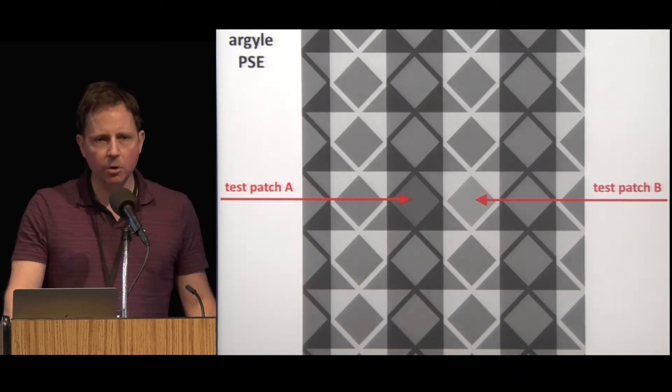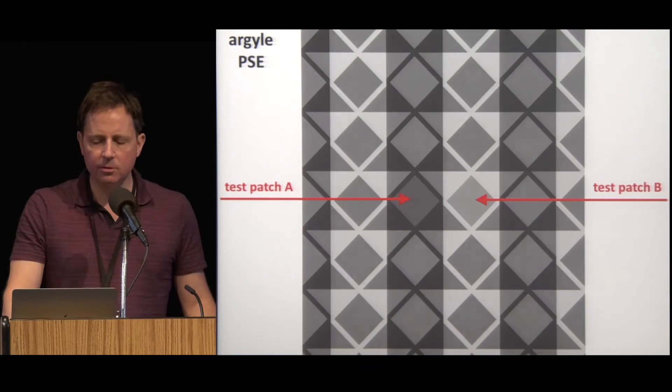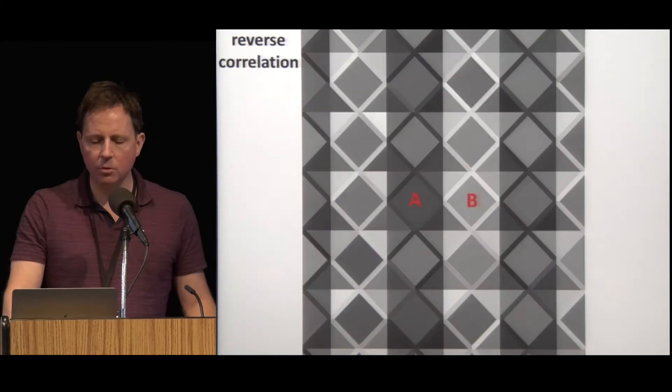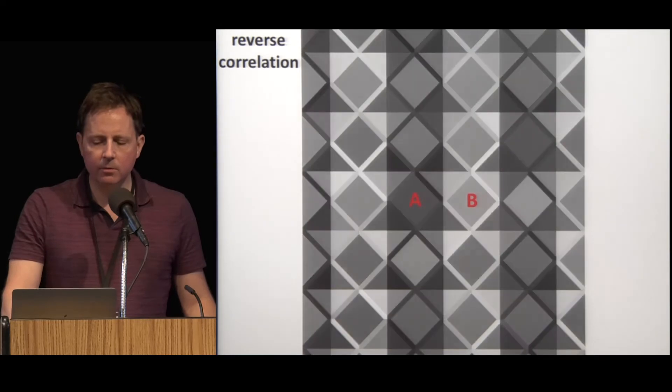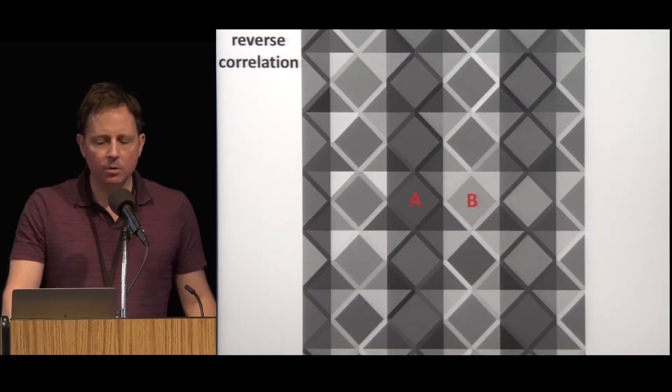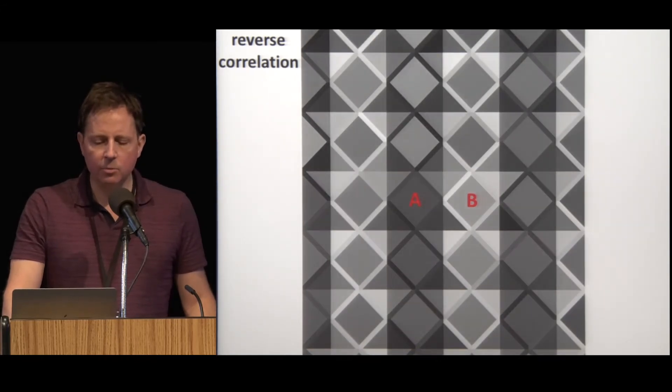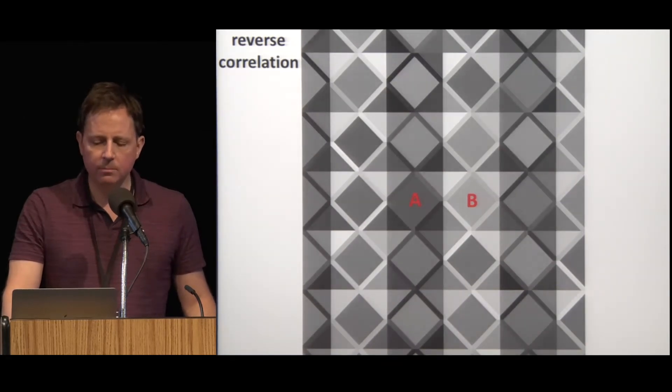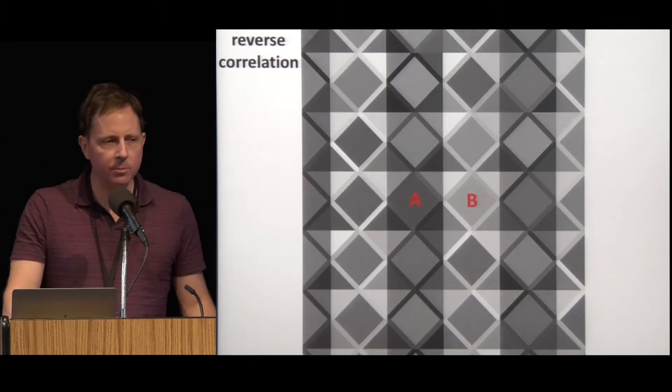But PSEs, useful as they are, don't directly address the question of what the key image features are in the computations that underlie lightness perception. To get at that question, we can use a psychophysical version of reverse correlation methods. Suppose now that we continue the PSE experiment, but now on every trial we randomly tweak the luminance of every image patch slightly up or down. The observer still judges which patch is brighter, A or B. Some random tweaks are going to affect the observer's responses and others won't. So the question is which image components drive the observer's lightness judgments and how do they contribute to perceived lightness? One simple approach is to measure the correlation between the random tweaks in the image patches and the observer's responses. At different locations, we'll find positive, negative, or zero correlations. The pattern of correlations across the whole stimulus will show us a lot about what image features contribute to the observer's lightness judgments.